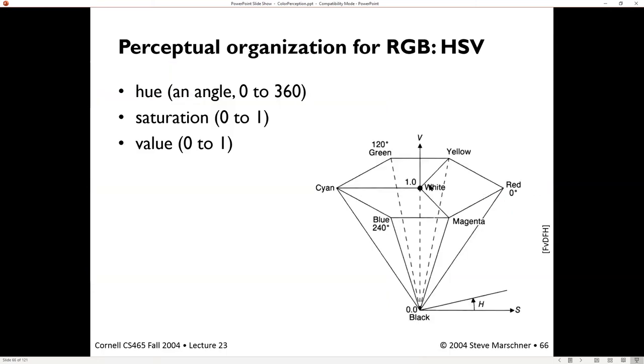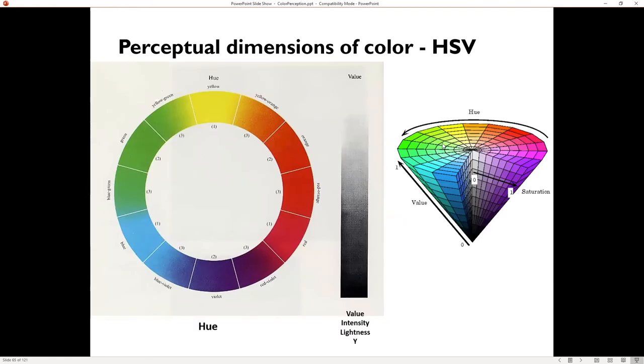Here's another picture of the same thing. So the hue angle is from 0 to 360. Saturation and value go from 0 to 1. And here are some labels of what are the colors around this. Sometimes drawn as a hexagon, sometimes drawn as a circle.